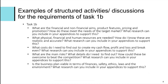For Task 1B, discussions or activities could be based around: what are the financial and non-financial aims, the product features, the pricing and the promotion, and how do these meet the needs of the target market? What research can be included in appendices to support this? What physical, financial and human resources are needed, and how do they know these are realistic and accurate? What costs do they need to find out in order to create their cash flow, profit and loss, and break even? What are their main risks, what details do they need to find out, and how could these be overcome to beat their competitors? Is the business plan viable in terms of finances, safety, ethics, laws and the environment? And what research can be included in their appendices to support all of this?